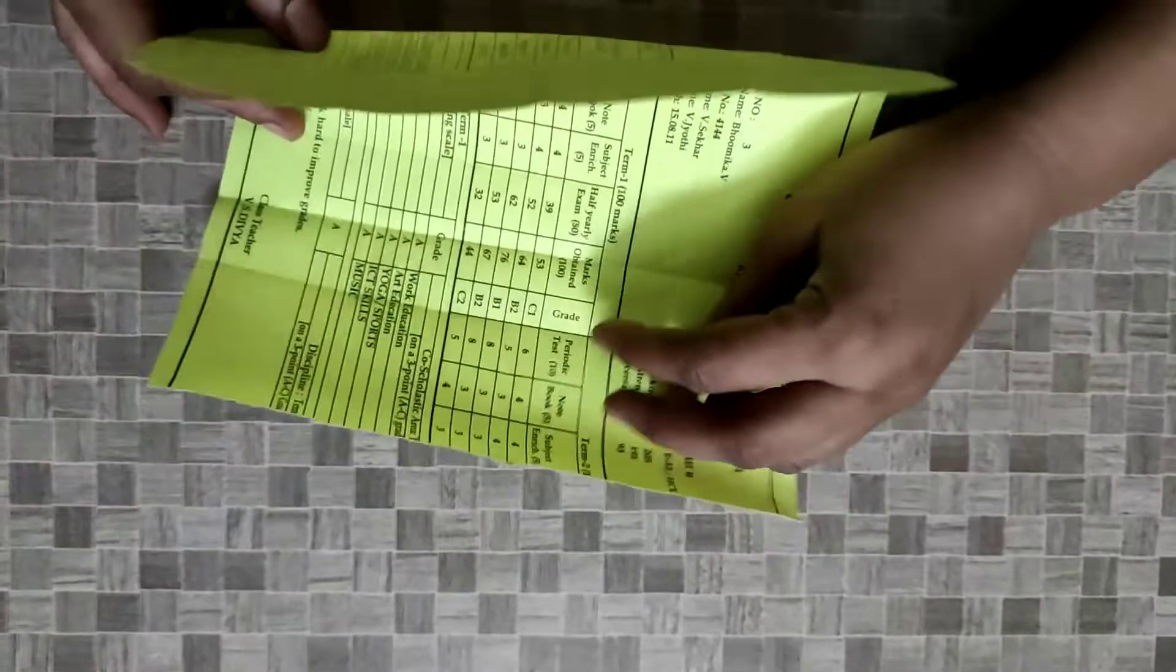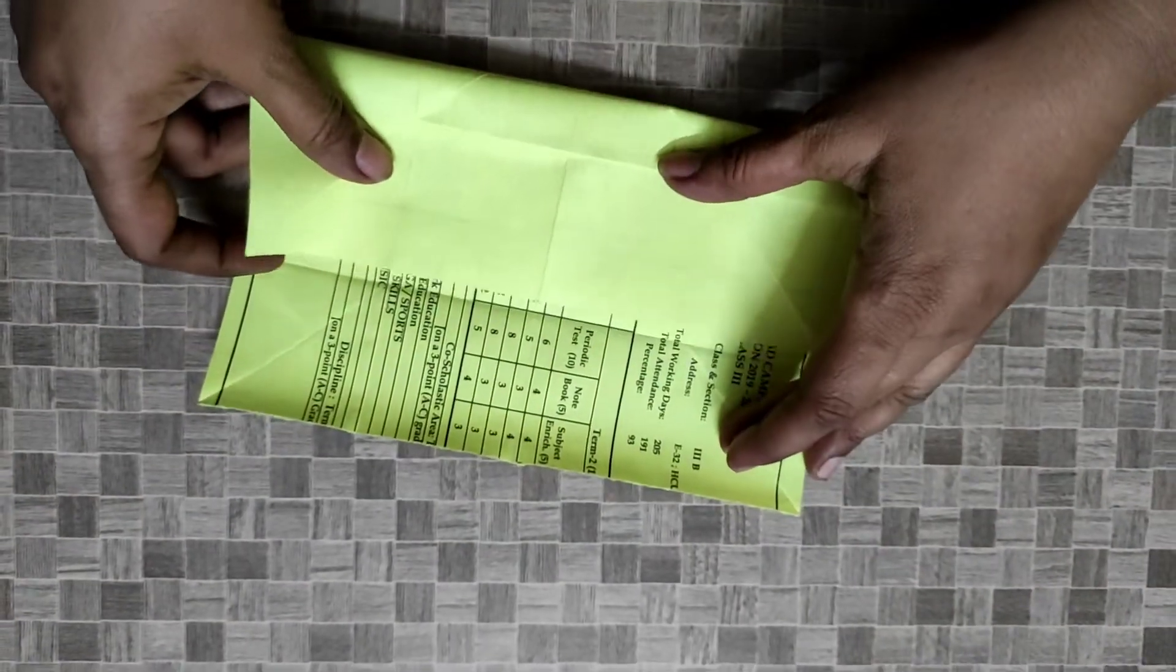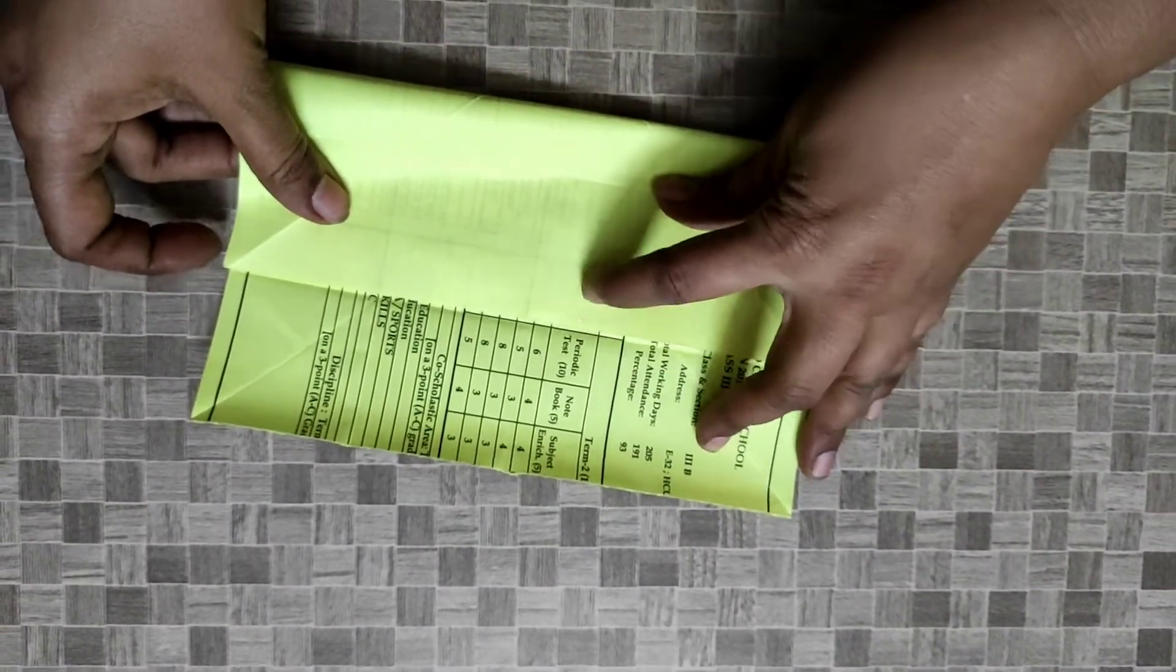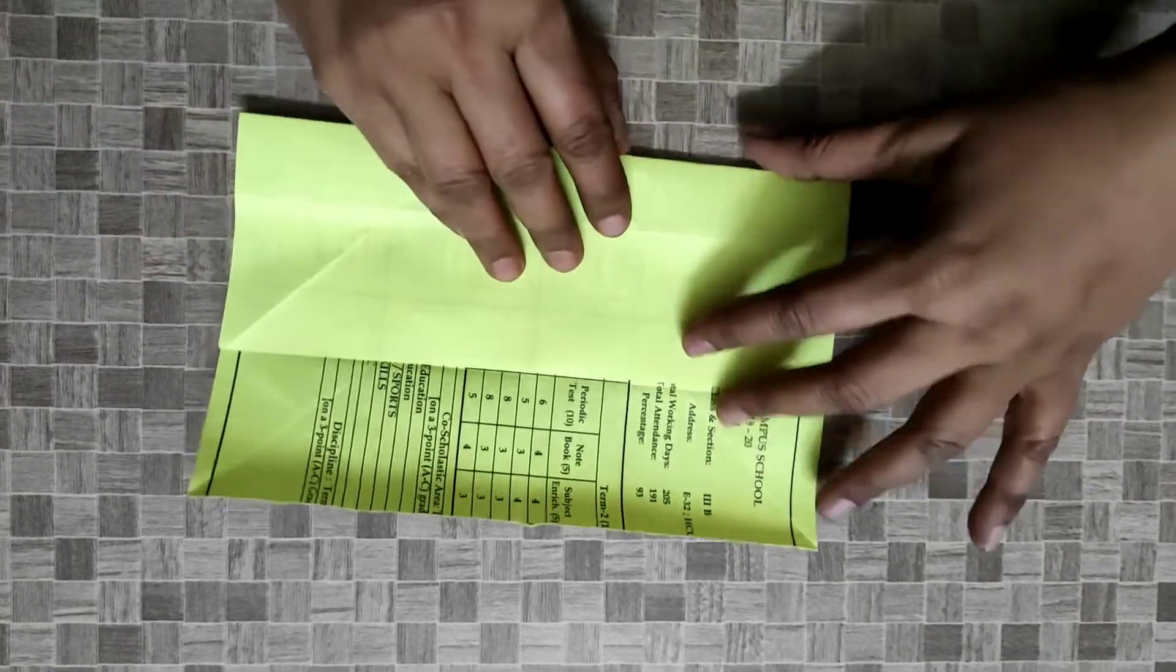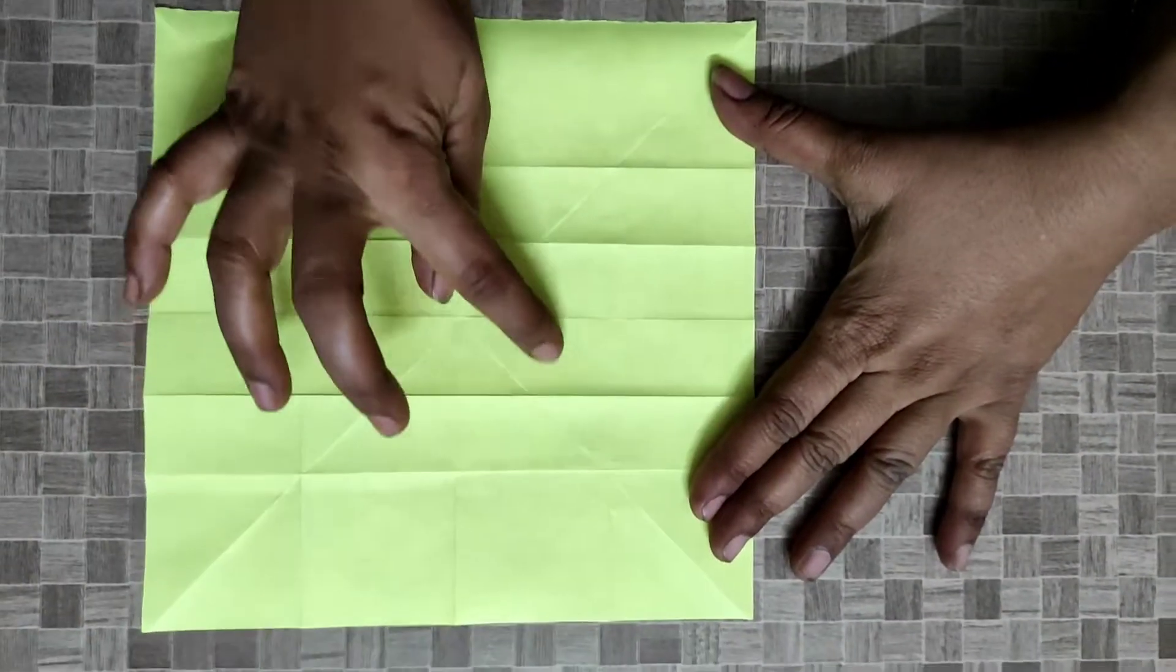Like that, from this side also fold up to one fourth. So here you can see four small boxes.